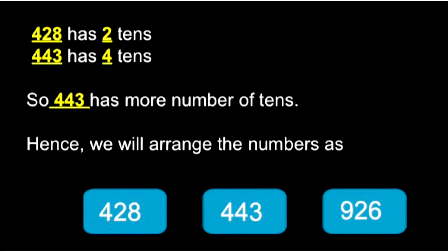How do we arrange these numbers in ascending order? The smallest number comes first. What's the spelling of ascending order? A-S-C-E-N-D-I-N-G — 'S' stands for smallest number. We arrange the numbers in ascending order as 428, 443, and 926.